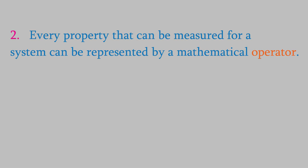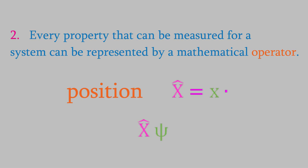So, what do these operators look like? Let's look at a few of them. Suppose the property we're measuring is the location of the system in the x-dimension. In that case, the operator has the symbol x-hat, and the operator is just multiplication by x. Think about what that's telling us. When we measure the location of a system on the x-axis, that measurement corresponds to taking the wave function of the system and multiplying it by x.